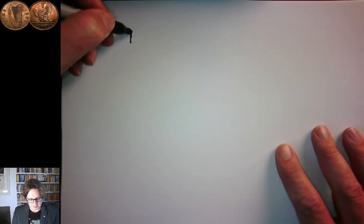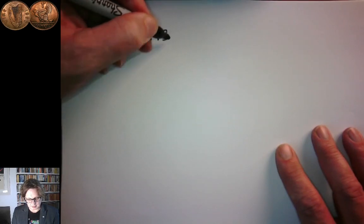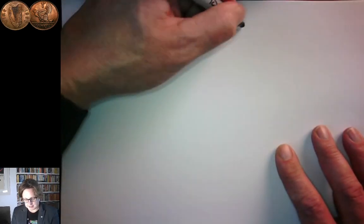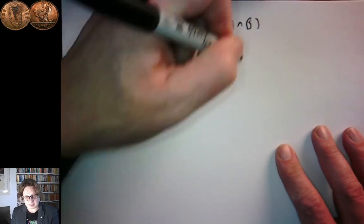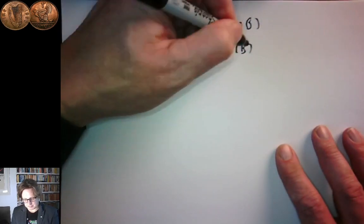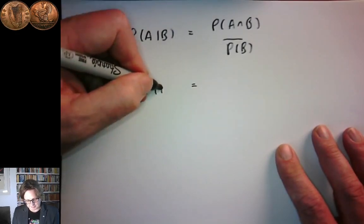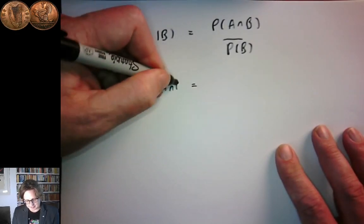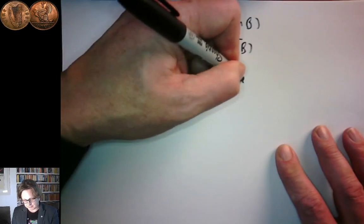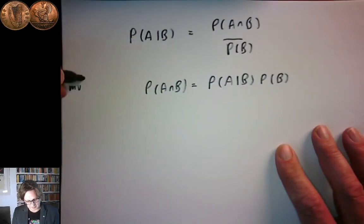First of all, we saw the definition of conditional probability. The probability of A given B is the probability of A and B — that is the intersection of the two events — divided by the probability of B. If we write this the other way around, P of A and B is equal to P of A given B multiplied by P of B. That's sometimes called the multiplicative law.